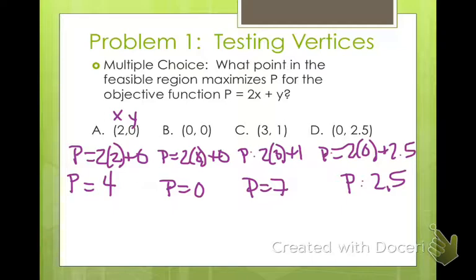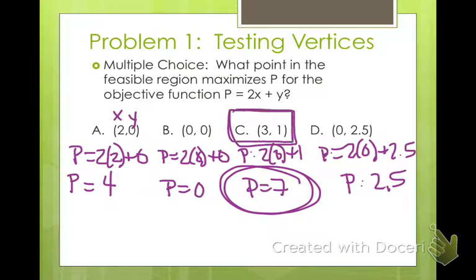So for this one, if we want to maximize, which one of these is the maximum? Well, it's obviously P equals 7. So our point (3, 1) would be our objective, our point that maximizes our objective function.